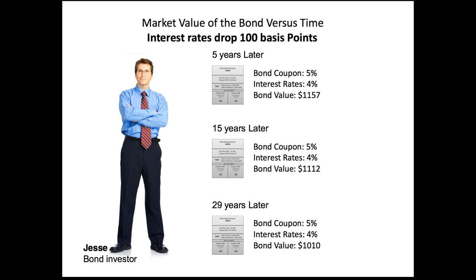Let's assume interest rates dropped 1% opposed to raised 1%. I want to highlight a term you might hear when getting involved in bonds: basis points. We're talking about a coupon of 5% and interest rates going down to 4% — that's called 100 basis points. A 1% change is 100 basis points, so a 2% drop would be 200 basis points. That's just some terminology to take with you so you understand what people are talking about.